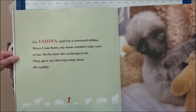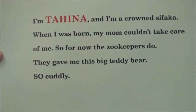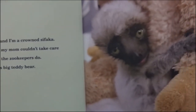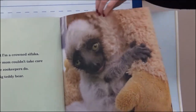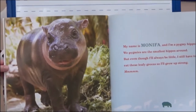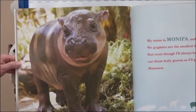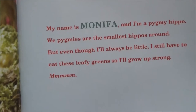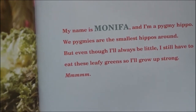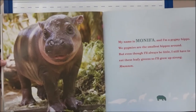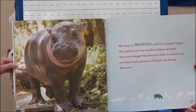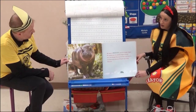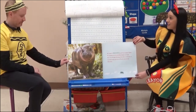I'm Tahina and I'm a crowned sifaka. When I was born, my mom couldn't take care of me, so the zookeepers do. They gave me this big teddy bear, so cuddly. My name is Monifa and I'm a pygmy hippo. We pygmies are the smallest hippos around. But even though I'll always be little, I'll still have to eat these leafy greens so that I'll grow up strong.